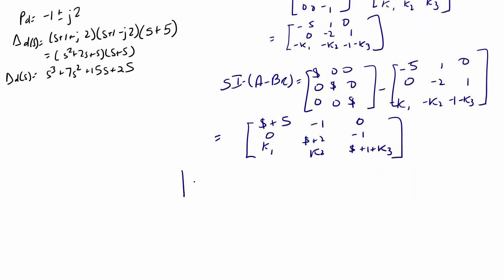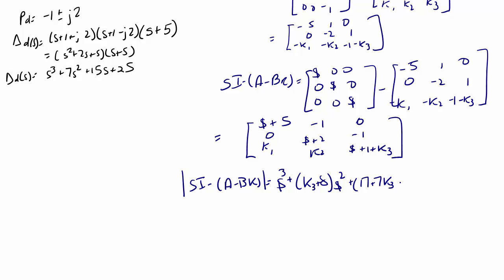The determinant of SI minus (A minus BK) is equal to S³ + (k3 + 8)S² + (17 + 7k3 + k2)S + (10 + k1 + 5k2 + 10k3).